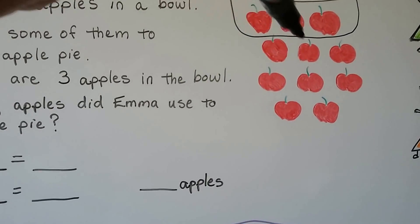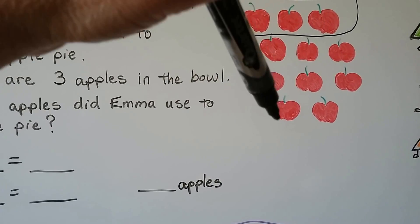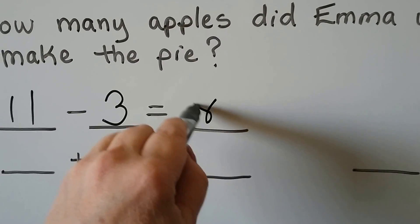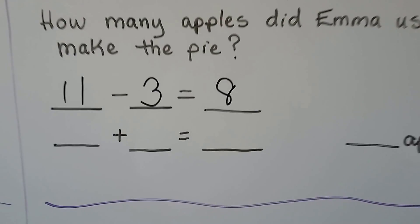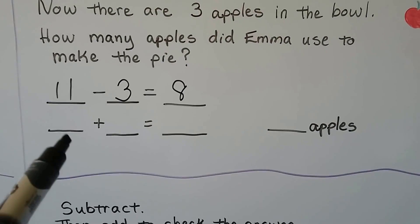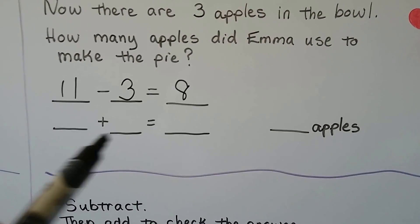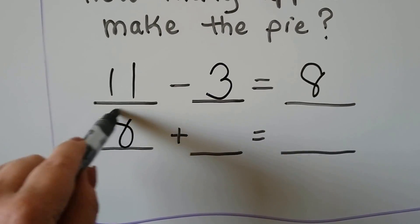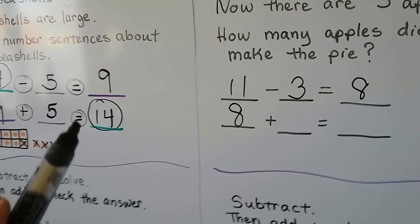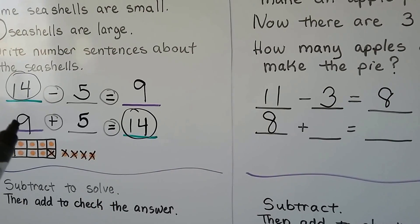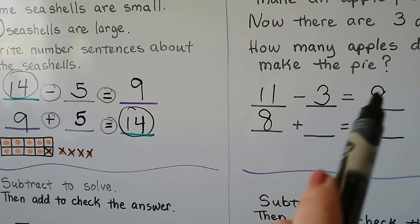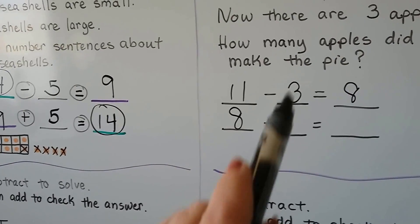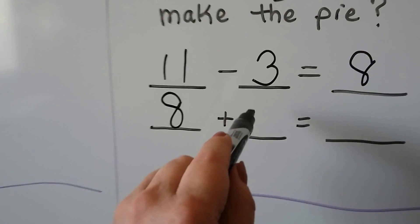Whatever's not in the bowl is what she used in the pie. Counting what remains: one through eight. Our difference is eight. To check this, the difference is going to be the addend up here, and the other space is going to be the same number as the subtracted part.